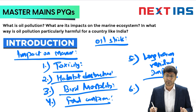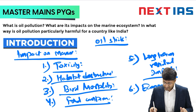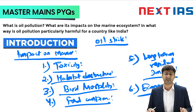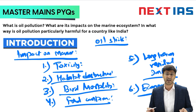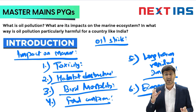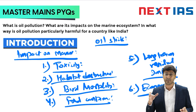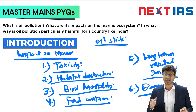The sixth impact is the economic impact. The tourism industry and the fishing industry are badly affected due to reduced fish counts and the unattractiveness of oil-contaminated beaches, which are no longer appealing to visitors.